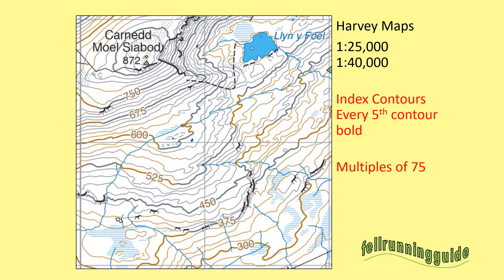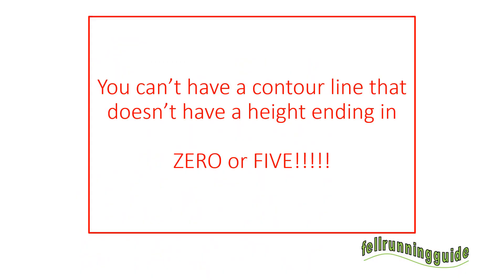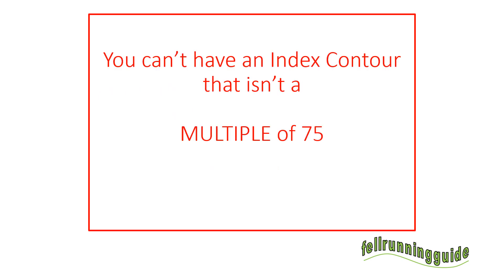Five 15s is 75, so the index contours go up in multiples of 75: 300, 375, 450, 525. To sum up with Harvey Maps: you can't have a contour line that doesn't end in a 0 or a 5, and you can't have an index contour that isn't a multiple of 75 — they go up in 75s.